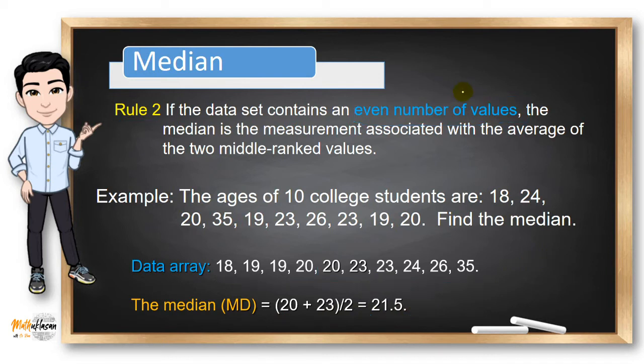If you're having a trouble identifying the middle rank values, you can use the formula (n + 1) divided by 2. So n is equal to 10 plus 1 divided by 2. The answer is 5.5. 5.5 tells us that we need to choose the fifth and the sixth value because 5.5 is between these two ranks. So the two middle rank values are 20 and 23.